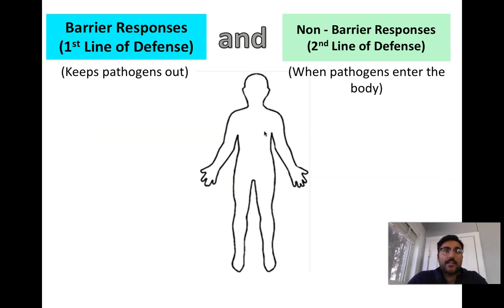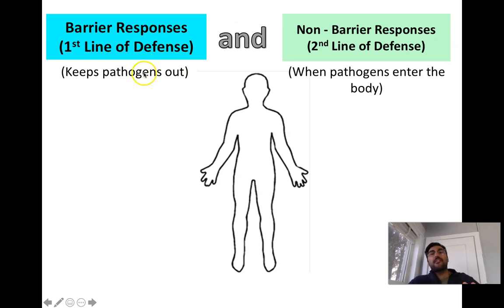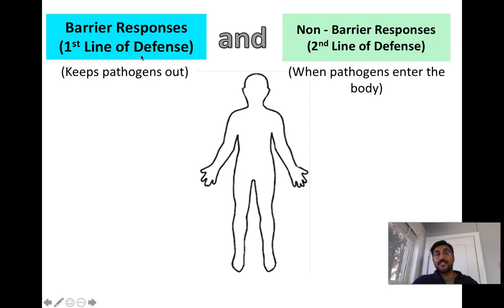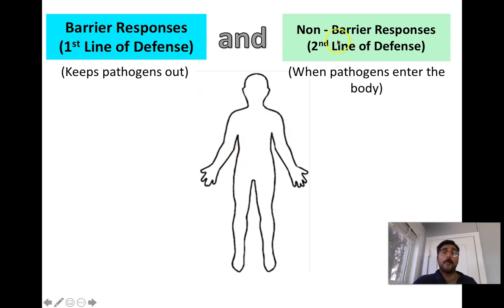How does the body protect itself from pathogens? There's a first line of defense and a second line of defense. The first line of defense is what we call the barrier response — it's what keeps pathogens out of the body. The second line of defense comes into play after the first line has been breached. If barriers have been breached and pathogens have gotten inside the body, the second line of defense or non-barrier responses will take hold.